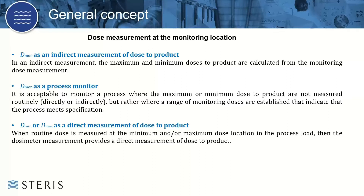A combination of these components can be used to determine the maximum and minimum dose targets for the routine monitoring dose. For process monitoring, it's basically using dosimetry at locations not on the product to monitor the process. In this situation, the variability associated with the measurement of minimum and maximum doses for PQ, combined with other relative components of uncertainty, can be used to determine minimum and maximum dose targets for the routine monitoring. Direct measurement means placing dosimeters throughout the product load at minimum and maximum dose locations determined during PQ mapping, and can also be used as an indicator that the process is in a state of control.